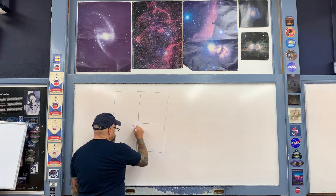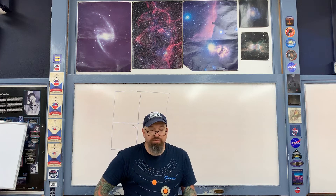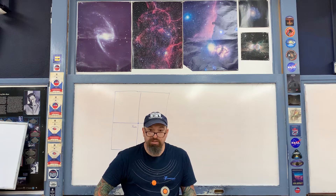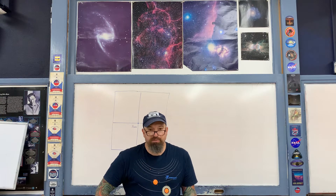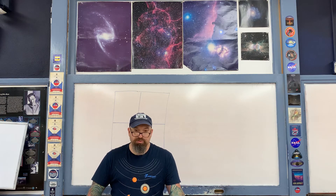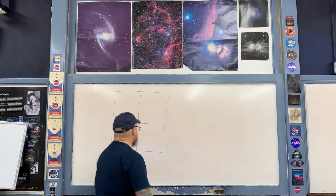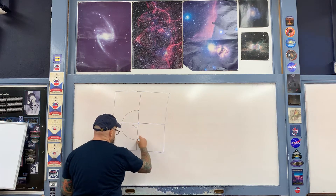Next, take a drawing compass and draw a circle with a radius of 10 centimeters, centered on the sun. This will represent the orbit of the Earth. The Earth's orbit is technically an ellipse, but its eccentricity is small enough that for practical purposes we can simplify it as a circle.